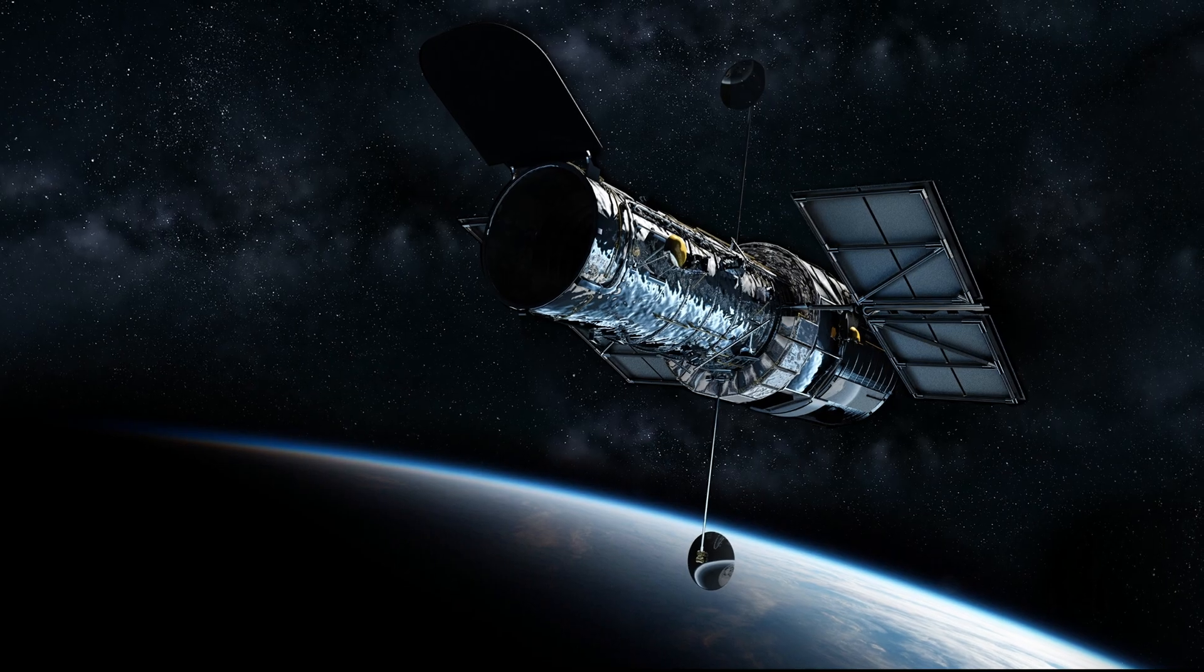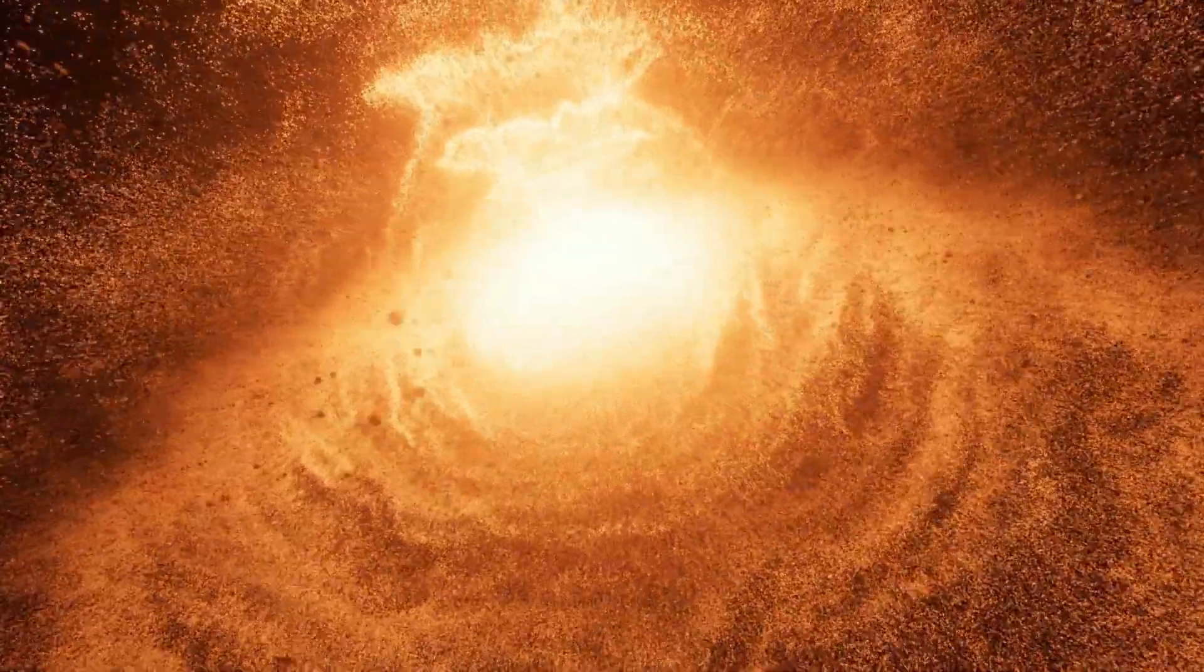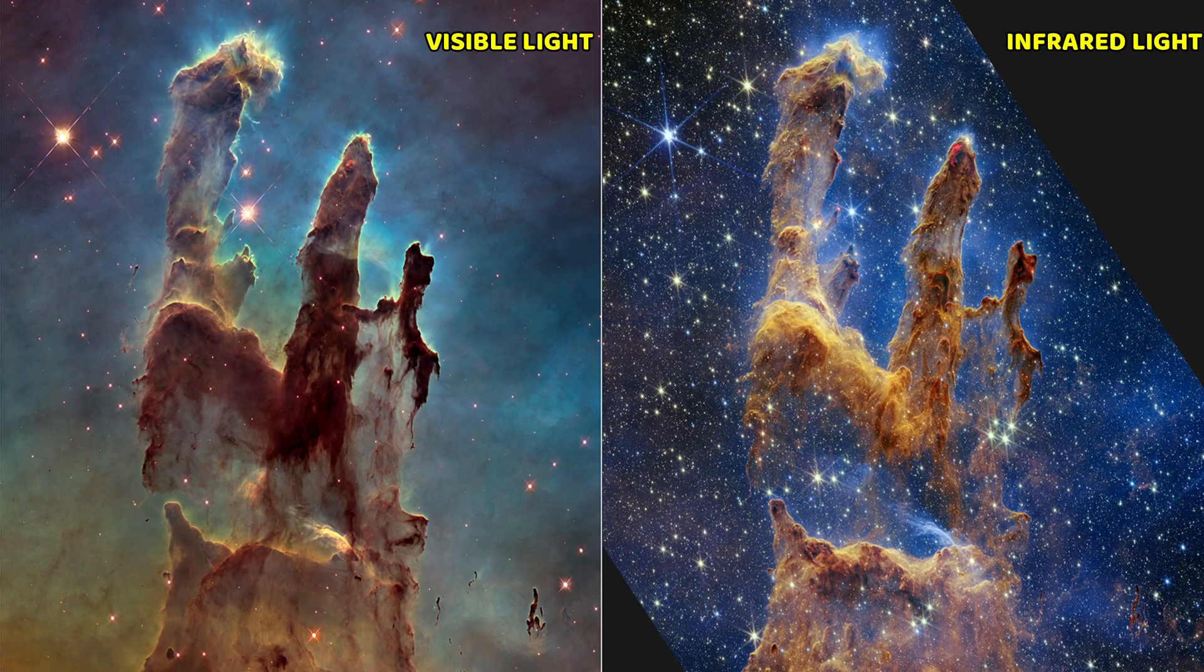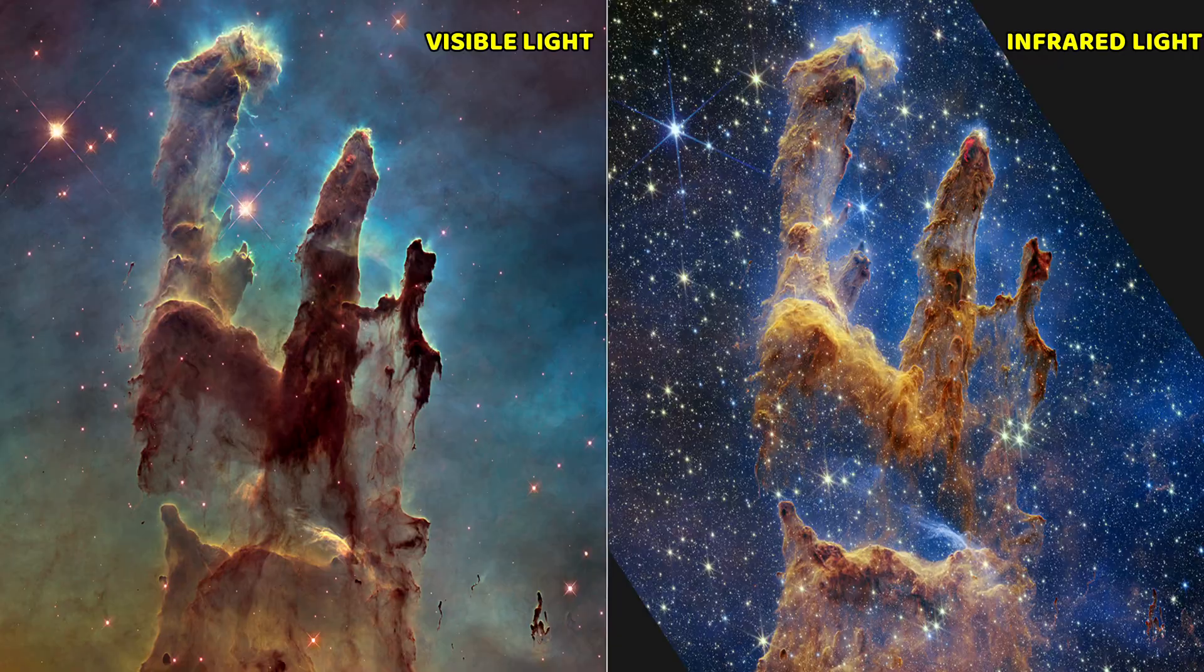While the Hubble telescope collects images in mostly visible light, the specialty of the James Webb Space Telescope is its infrared vision, which will be able to see the very first stars and galaxies forming out of the darkness of the early universe. And these infrared lights can even pierce through cosmic gas dust and make stars visible behind them.